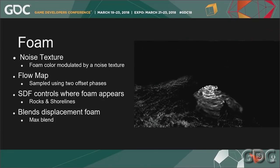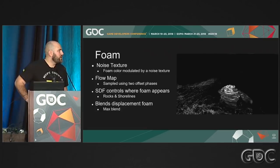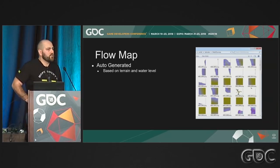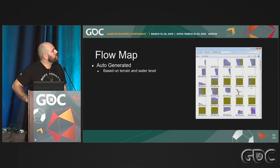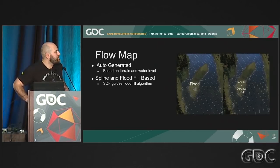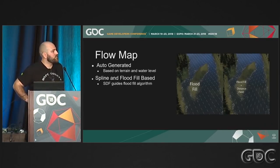Foam is straightforward — a noise texture modulated by a noise texture — but the more complex portion is the flow map, sampled using two different offset phases to avoid pulsing. Foam is shown based on a signed distance field derived from shorelines and rocks, and we blend displacement foam with shoreline foam. Since we're an open world game, we bake the entire world's flow map offline. This uses a flood fill algorithm, but the flood fill is tricky because some pixels arrive sooner than others, so we use a signed distance field to guide the fill around corners, which also works for rocks.